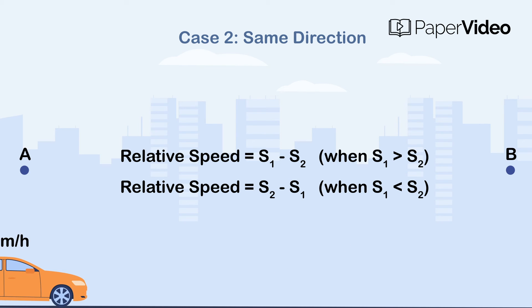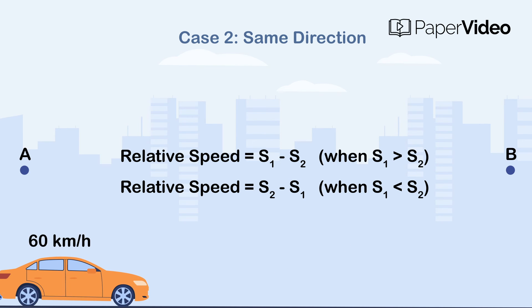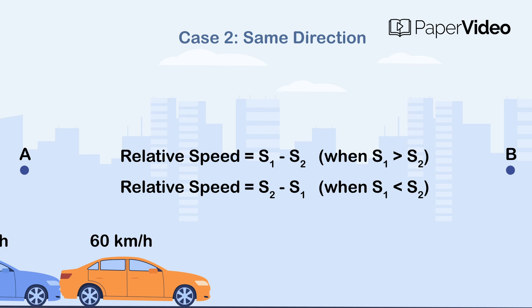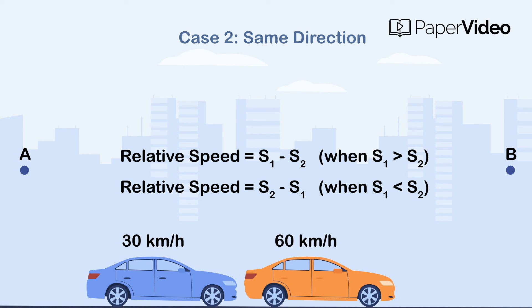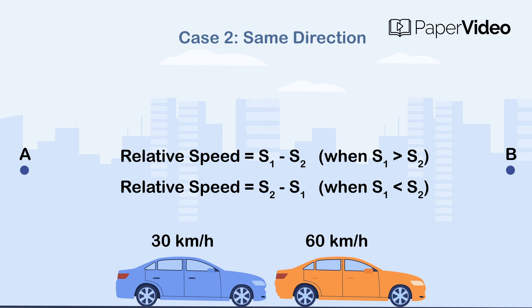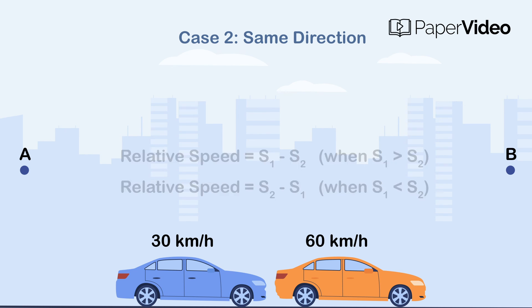For example, two cars are moving from point A to point B at the speed of 30 km per hour and 60 km per hour respectively. What is the Relative Speed of car A with respect to car B? In this example, the cars are moving in the same direction. So, the Relative Speed would be 30 km per hour.